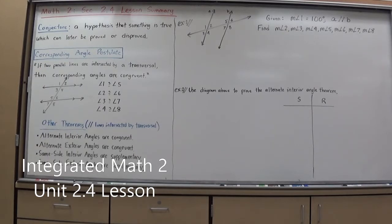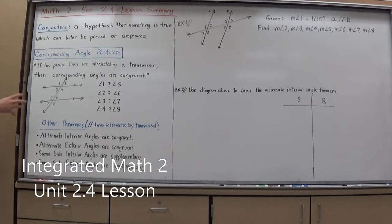This will lead us into our first postulate. A postulate is a rule that we just accept automatically as true, which means we can use it in proofs to get us started. The one we're going to learn today is the Corresponding Angle Postulate. It states: if two parallel lines are intersected by a transversal, then corresponding angles are congruent.